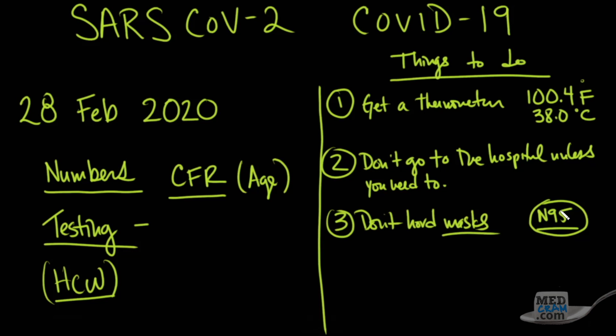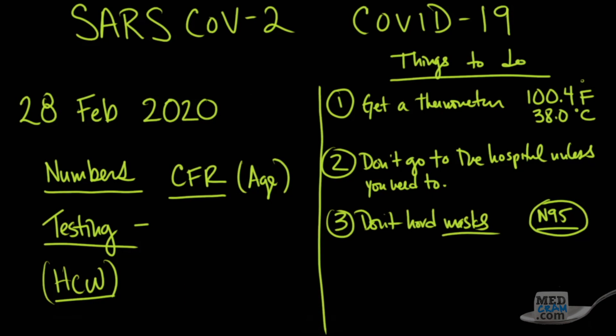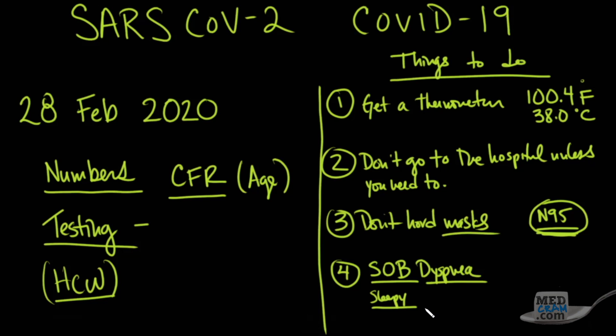N95 masks are needed by physicians, nurses, respiratory therapists, and other ancillary hospital staff so they can continue treating patients while staying healthy and avoiding quarantine. It's important they have that equipment — without it, they'll get sick and won't be there when you need them. Number four: if you have severe symptoms — shortness of breath, dyspnea, chest pains, lethargy, or unresponsiveness — go to the hospital, especially if you're not getting better. But call ahead to find out where to go, so you don't expose others to your virus.